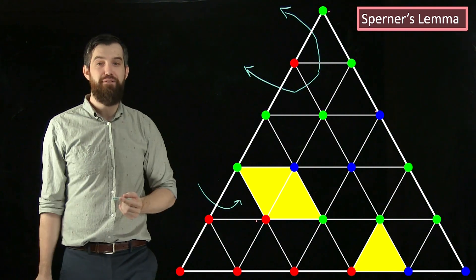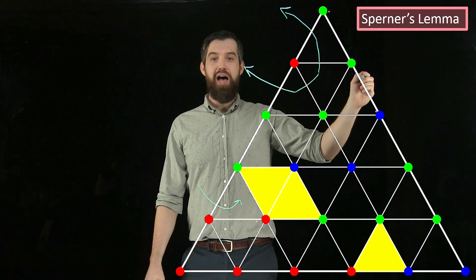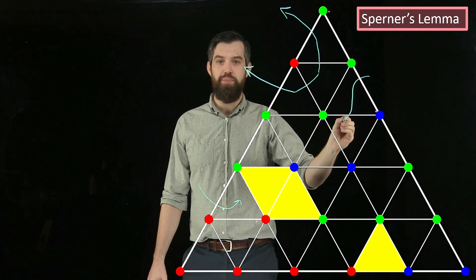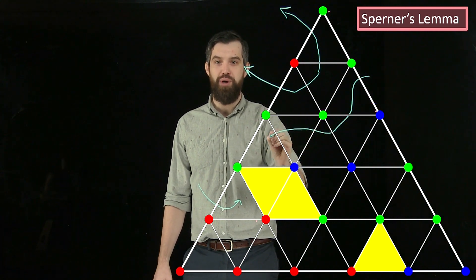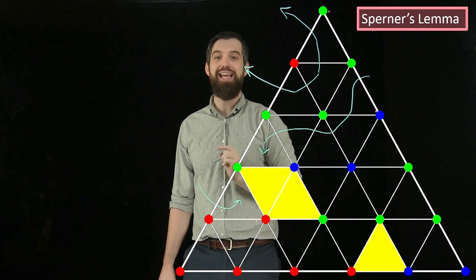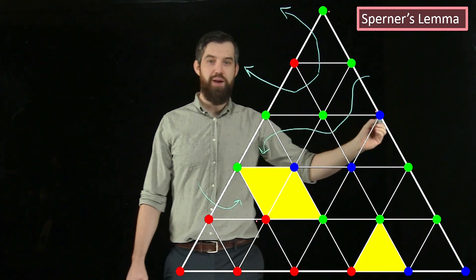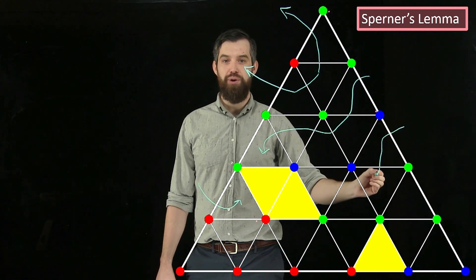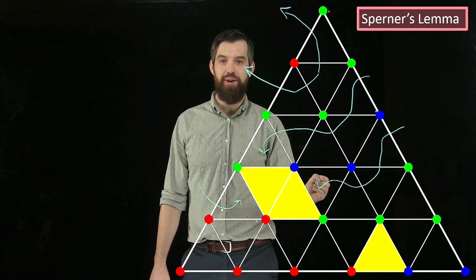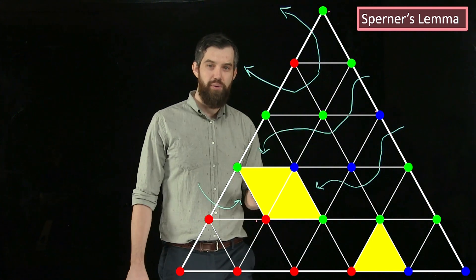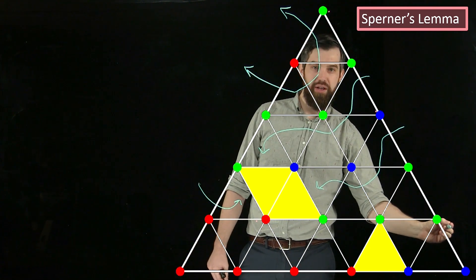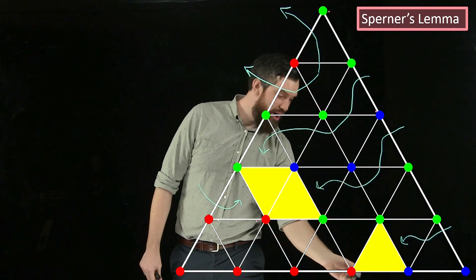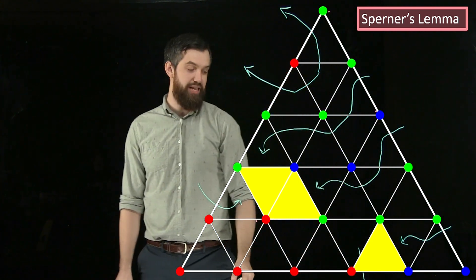There are more cases: a green-blue edge path comes in and gets stuck in an all-three-color triangle. Other green-blue paths come in from different points and also get stuck. So we've seen two ways things can occur: I come in and go out — taking up two edges total — or I go in and get stuck.